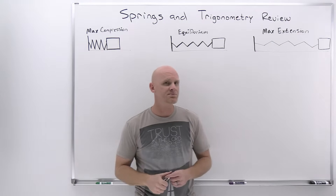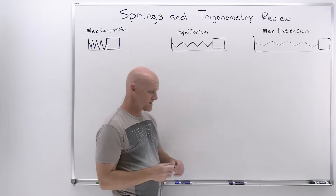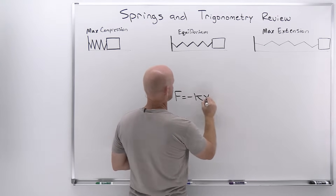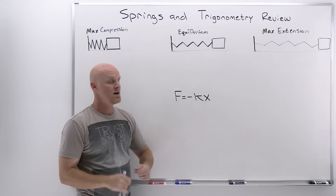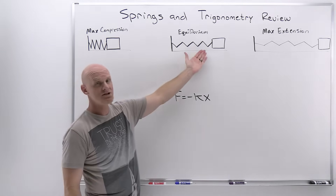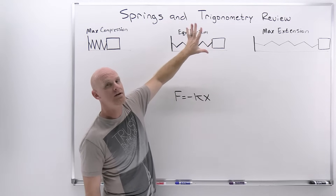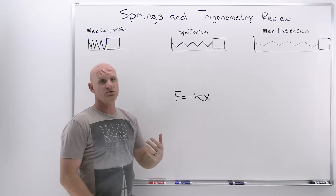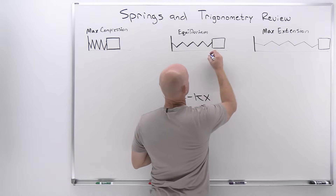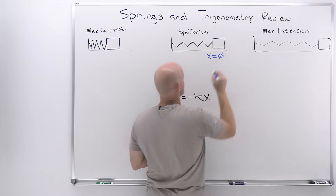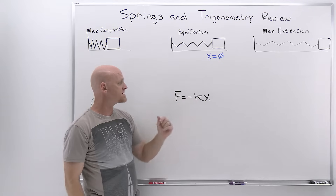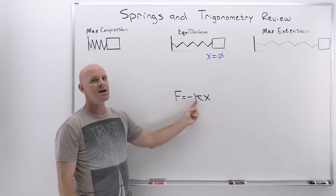We'll start with a brief review of springs, which we covered earlier in the course. An ideal spring is one that follows Hooke's Law, which gives you the formula for the restoring force: F equals negative kx, where x is the displacement away from the equilibrium position. The equilibrium position is the place where if you held onto that mass and let it go right there, it would not move afterwards.